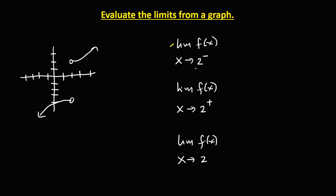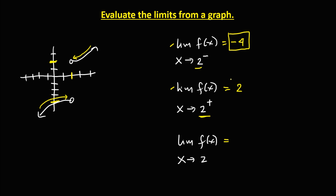As x approaches positive 2 from the left, the graph approaches positive 2 from the left, so the limit is equal to negative 4. For the limit as x approaches positive 2 from the right, the graph approaches positive 2 from the right, so the limit is equal to positive 2. Since the left-side limit is not equal to the right-side limit, the limit as x approaches positive 2 does not exist.